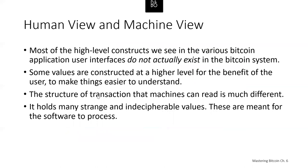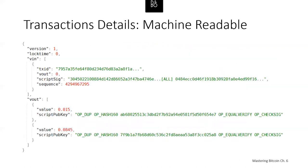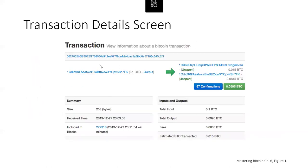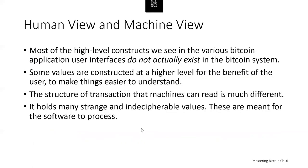The structure of the transaction that machines can read is very different — it has strange values meant for software to process. It starts with a version, a lock time, a vin, a transaction ID, a vout, a script sig, a sequence, a vout, values, and script pub keys. The two values of Bitcoin in the outputs — 0.1015 and 0.0845 — are actually in the transaction. But notice that for the input of 0.1 BTC, the transaction never explicitly states that input amount.